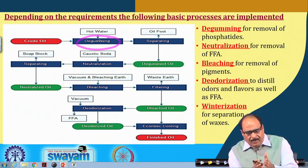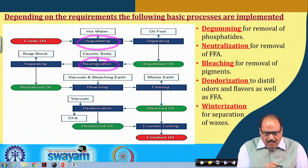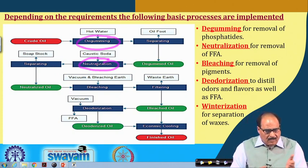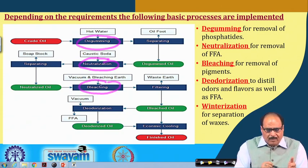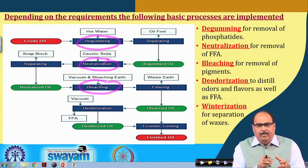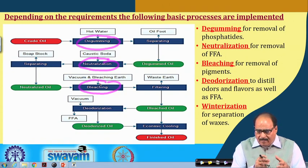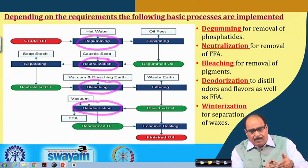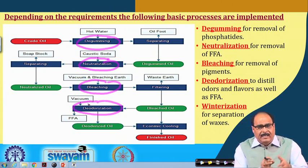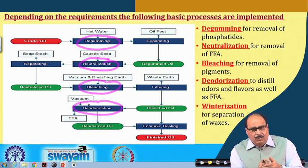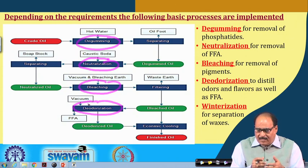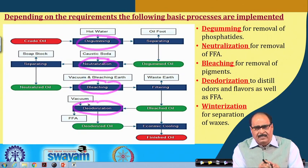After degumming, the degummed oil is sent to the neutralization step, which is again very important. In the degumming process the phosphatides are removed; in the neutralization step the free fatty acids are removed. The neutralized oil is next sent to the bleaching process where undesirable pigments or color products are removed. Finally, the last step of the refining process is deodorization, a very important step where components not removed in earlier processes, as well as minor components generated during bleaching and other steps, are all removed.